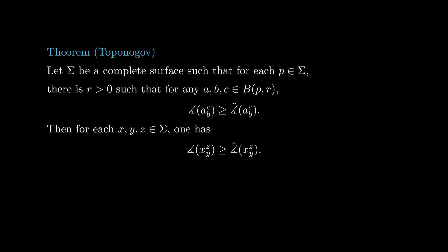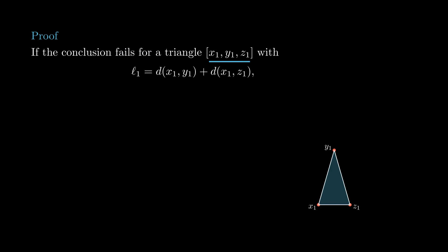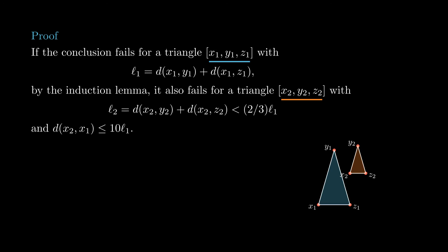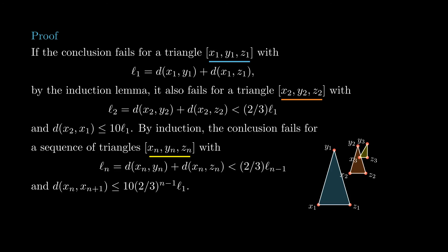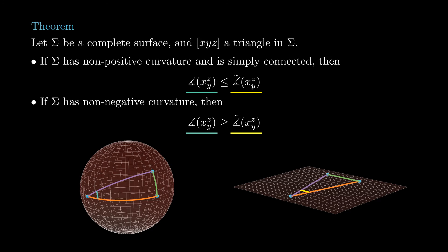Notice from the triangle inequality that Sₙ is always bounded above by Rₙ. This means that as n goes to infinity, the decreasing sequences Rₙ and Sₙ have the same limit, which implies that S₀ is greater than or equal to yz, which is what we wanted to show. Now we can easily prove Toponogov's theorem. We take a triangle x₁, y₁, z₁ and set L₁ to be x₁y₁ plus x₁z₁. If the conclusion of the theorem fails for the triangle x₁, y₁, z₁, by the induction lemma it also fails for some smaller triangle x₂, y₂, z₂ in the ball of radius 10L₁ around x₁. We apply the induction lemma over and over again to obtain a sequence of smaller and smaller triangles xₙ, yₙ, zₙ for which the conclusion fails. Since the distances between the points xₙ form a geometric sequence, it is a Cauchy sequence, and since the surface is complete, this sequence converges to a point x∞. However, x∞ should have a neighborhood in which the theorem holds, and since the triangles are smaller and smaller, they will eventually enter this neighborhood, giving a contradiction. This concludes the proof of Toponogov's theorem.